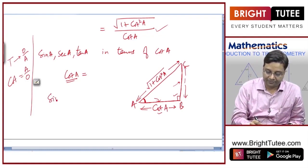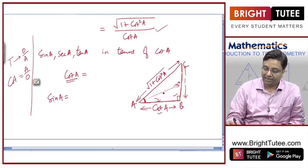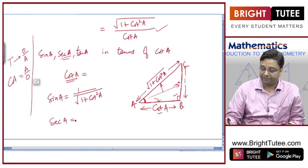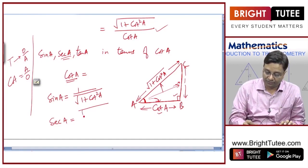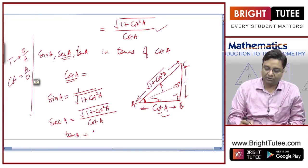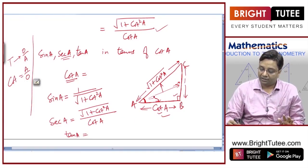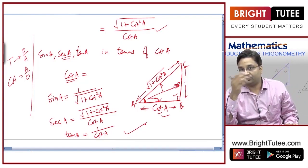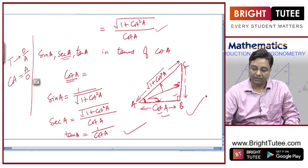Sin a is opposite by hypotenuse — one upon square root of one plus cot squared a. Secant a is the reciprocal of cos, and cos is adjacent upon hypotenuse, so secant is hypotenuse upon adjacent — square root of one plus cot squared a divided by cot a. Tan a is just the reciprocal of cot a, or opposite by adjacent — one by cot a.